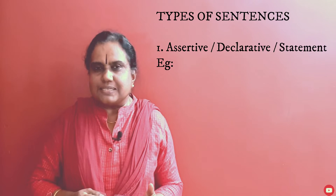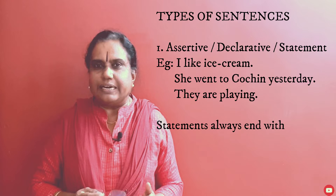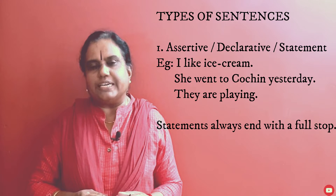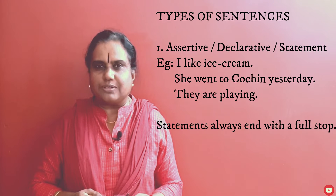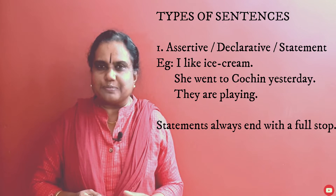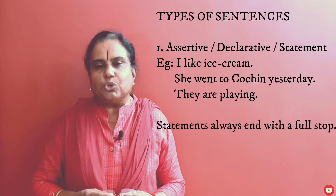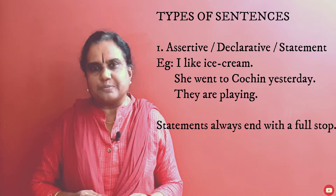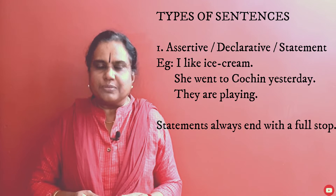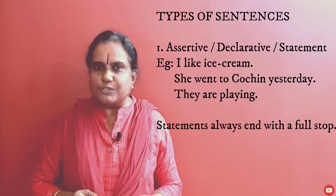Sentences are of different types. The first type is assertive, declarative, or statement. For example: 'I like ice cream.' 'She went to the kitchen yesterday.' 'They are playing.' These are statements, and they end with a full stop.